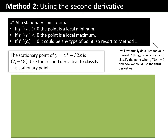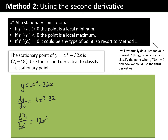So for the example: y = x⁴ − 32x, the stationary point is (2, −48). dy/dx = 4x³ − 32. Then d²y/dx² = 12x². Substituting x = 2: 12(2)² = 48, which is greater than zero. Therefore, minimum point. You can also write f''(x) > 0 to indicate this.